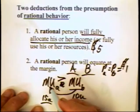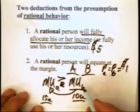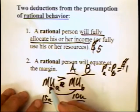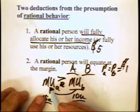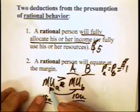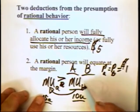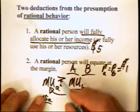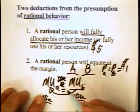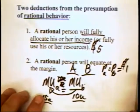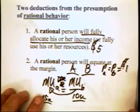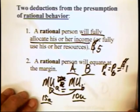As the individual moves expenditures from B to A, beyond some point the marginal utility of A will begin to decline as more is consumed, and the marginal utility of B will begin to rise as less of it is consumed. At some point, these two marginal utilities will come into equality.